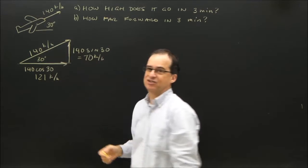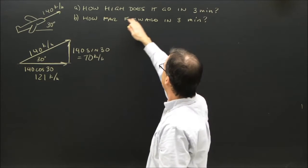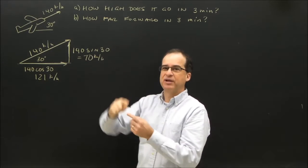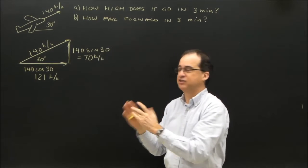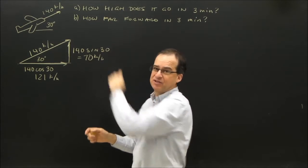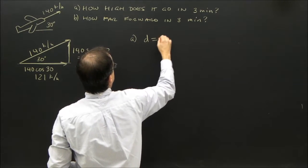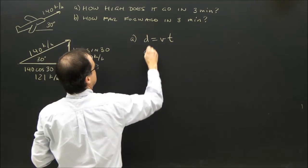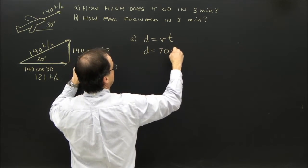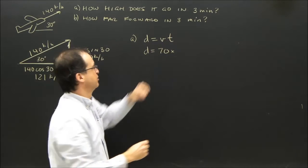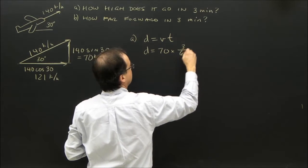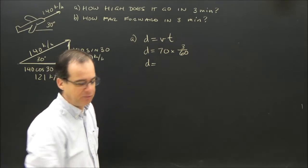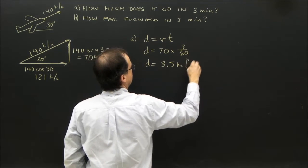How high does it go in three minutes? High is up, so the velocity that matches is the vertical component. For part A, displacement equals velocity times time — rearranged from v equals d over t. The distance it moved up is the velocity it was moving up times the time. We turn 3 minutes into hours: 3 divided by 60. So the displacement up is 3.5 kilometers upward.